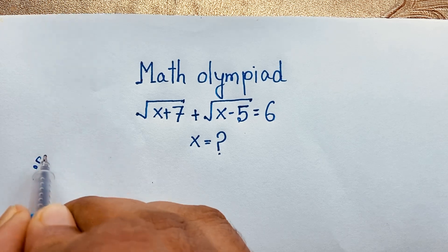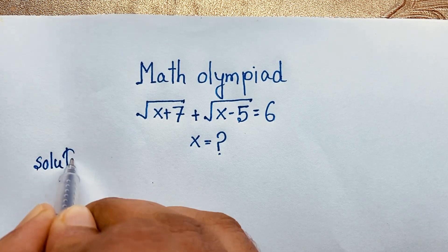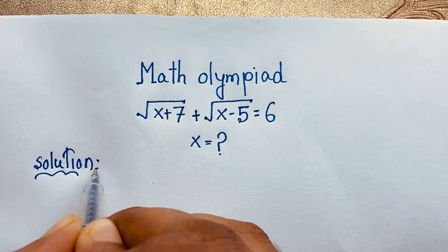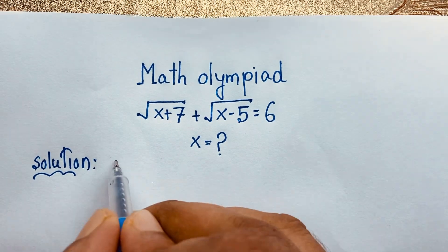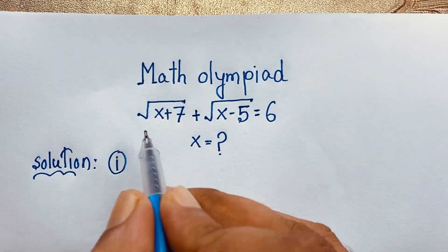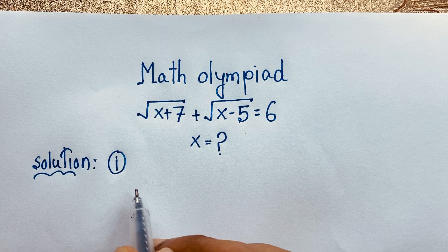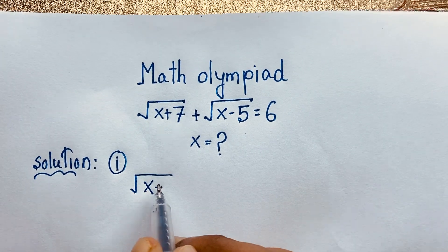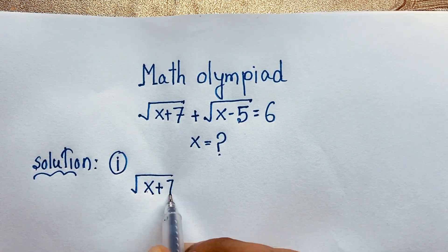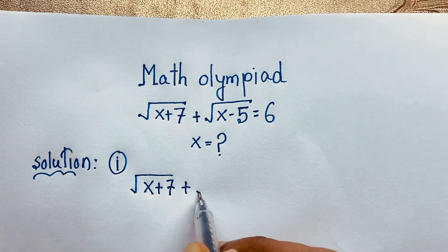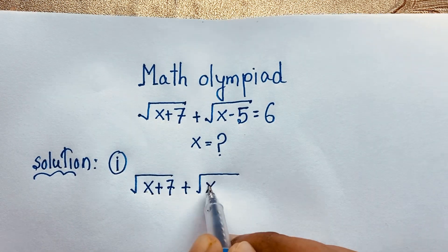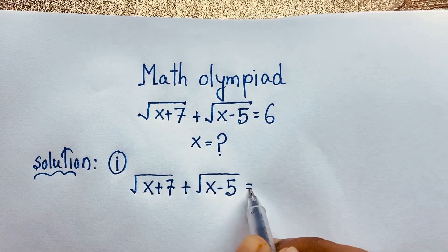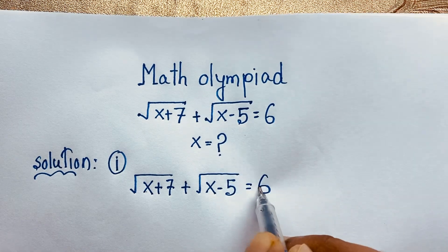So our math solution — I will solve this question by 2 methods. This is our first method. Our question is: square root of (x plus 7) plus square root of (x minus 5) is equal to 6. This is our question.